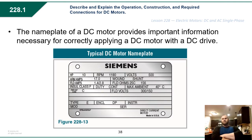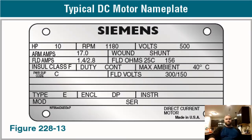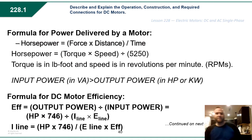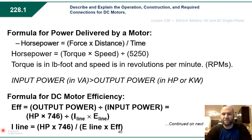The nameplate on DC motors provides important information necessary for correctly applying the motor with a DC drive. When doing an install, check the nameplate: what horsepower is it, how many volts does it take, what type of wound motor is it — shunt, series, or compound — and what's its overall rating. The efficiency formula is output power divided by input power — I might ask about that on the quiz. Horsepower equals torque times speed, or force times distance divided by time. Horsepower times 746 gives you watts: a 10 HP motor equals approximately 7,460 watts.